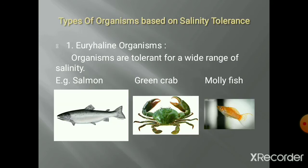Depending upon salinity tolerance, some organisms are called euryhaline organisms. Euryhaline organisms are those which can tolerate a wide range of salinity. Whether salinity is less or more, the organism can survive. Examples include salmon fish, green crab, and molly fish.